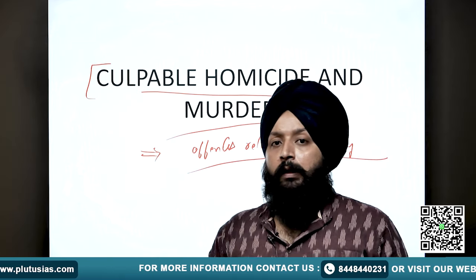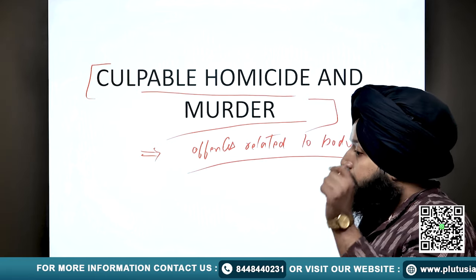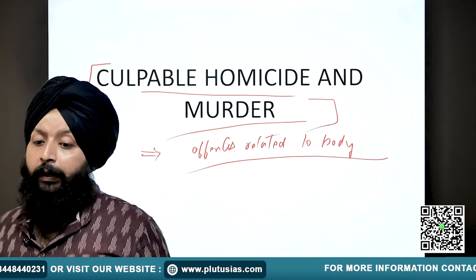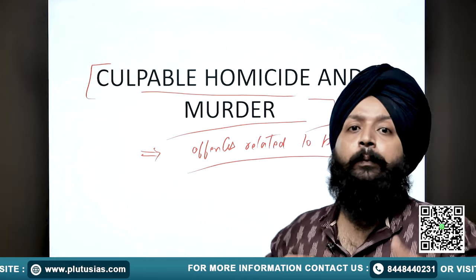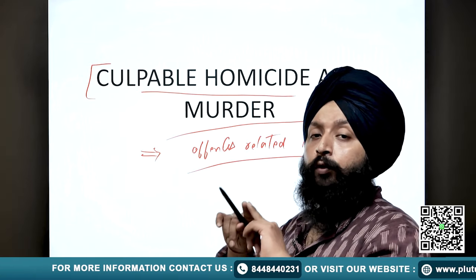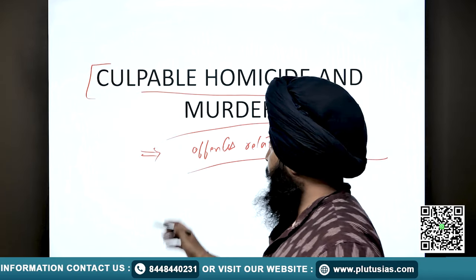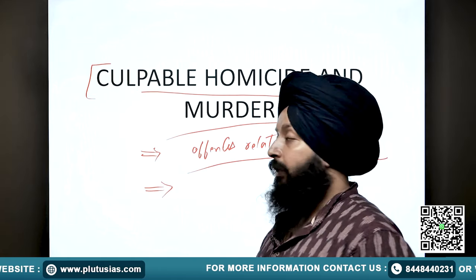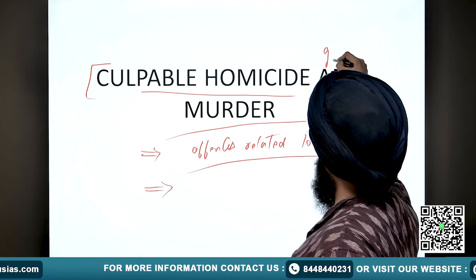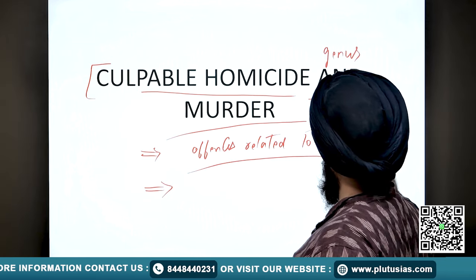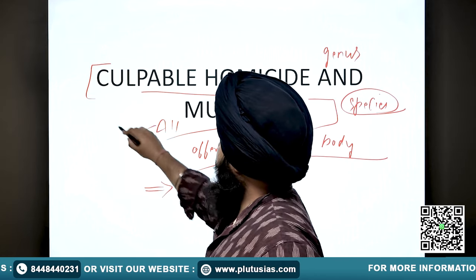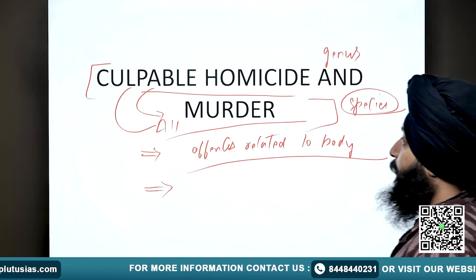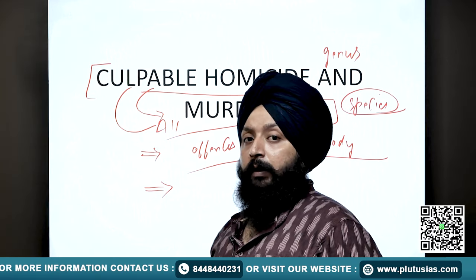We have to understand this topic in detail because the difference between culpable homicide and murder has inflicted even the courts of this country for so long. The difference between culpable homicide and murder is a fine thing and they seem to be overlapping over each other. First of all, we have to understand that they are not two distinct offenses - they are basically overlapping offenses. In general parlance, culpable homicide is a genus and murder is a species. That means all murders are culpable homicides, but all culpable homicides are not murders.